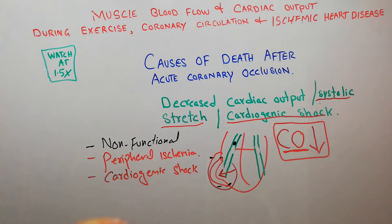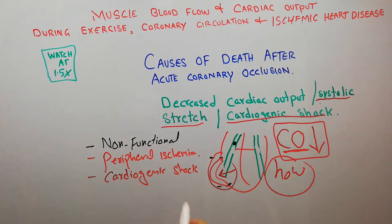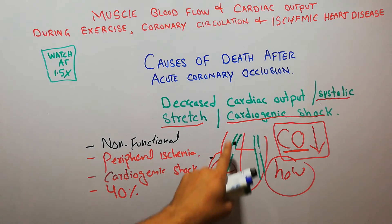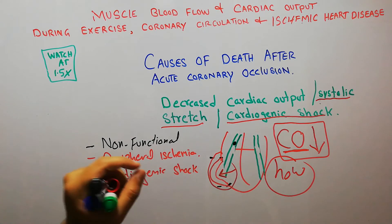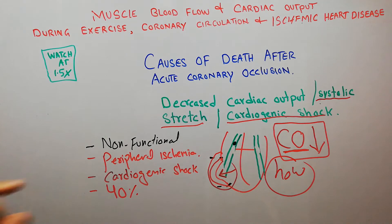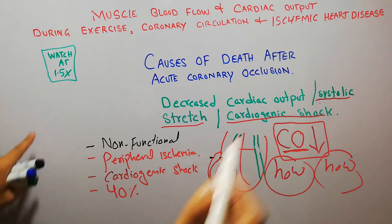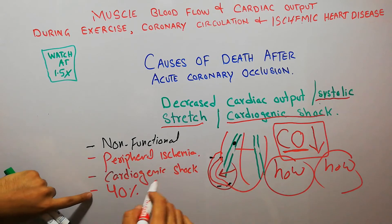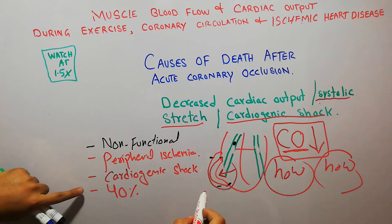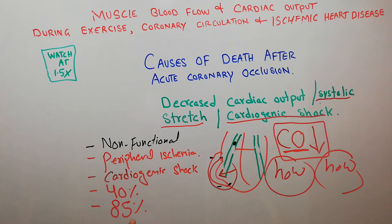When will cardiogenic shock develop? Normally, if around 40% of the total heart muscles are damaged — for example, when a large vessel of the heart has been occluded, usually due to atherosclerosis — the chances of cardiogenic shock and death due to decreased cardiac output are very high. And once cardiogenic shock has developed, around 85% of patients will ultimately die from this condition.